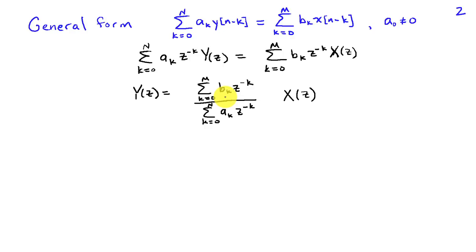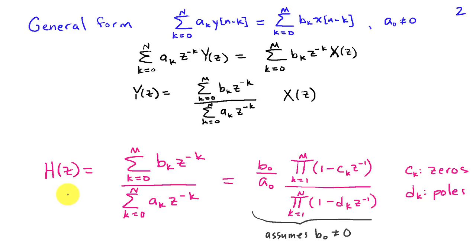And all that is multiplied by x of z. We've called such an H of z the transfer function or the system function. It's the ratio of the sum BK z to the minus k to the sum AK z to the minus k. And this function summarizes the characteristics of the difference equation.